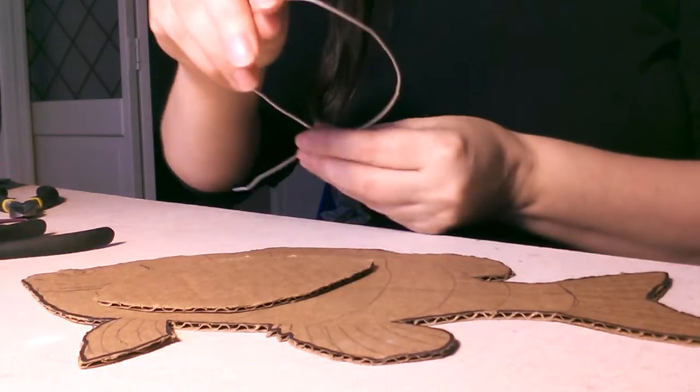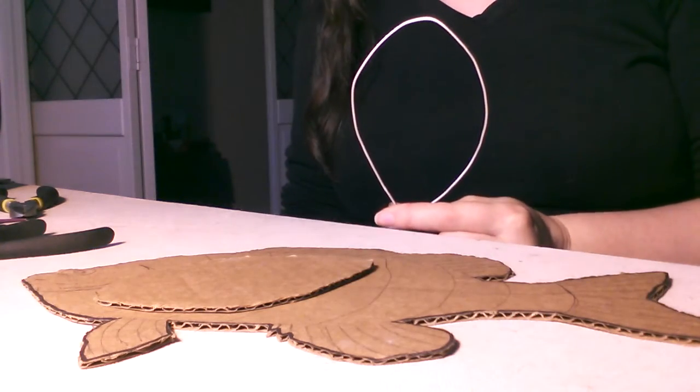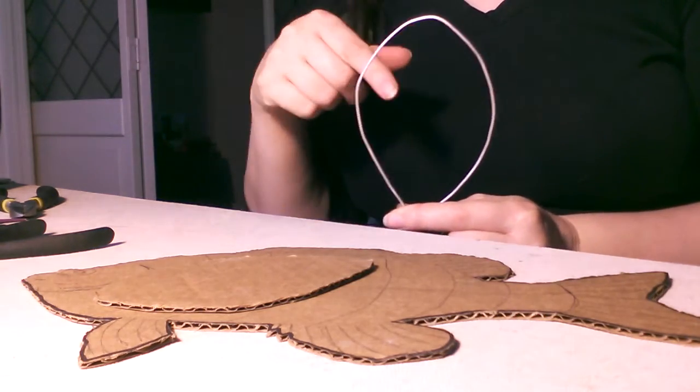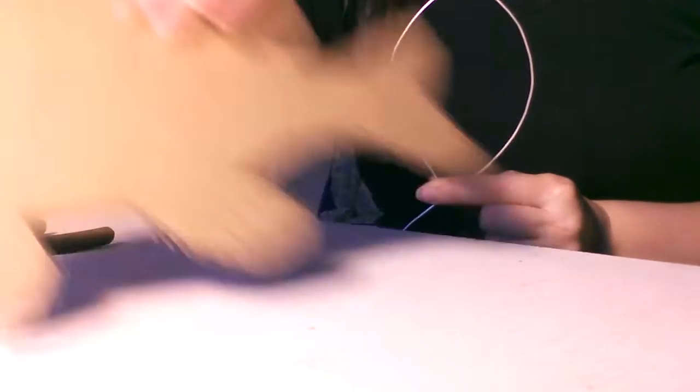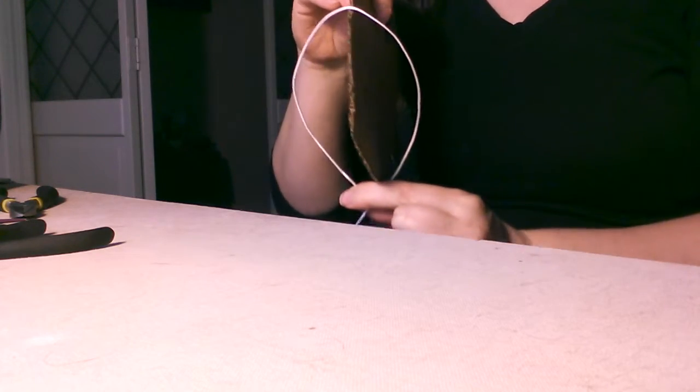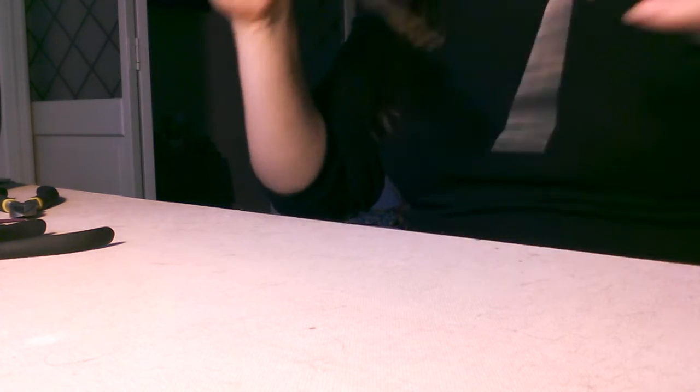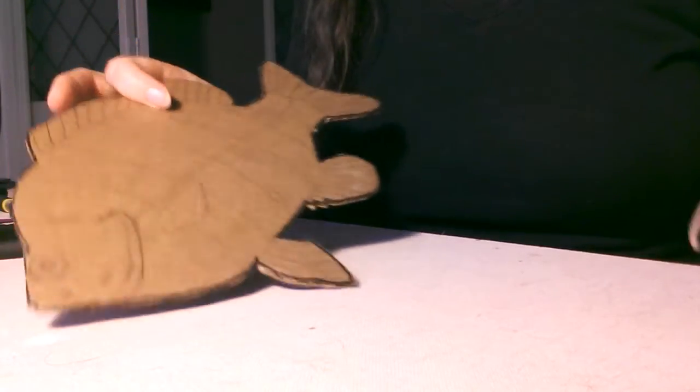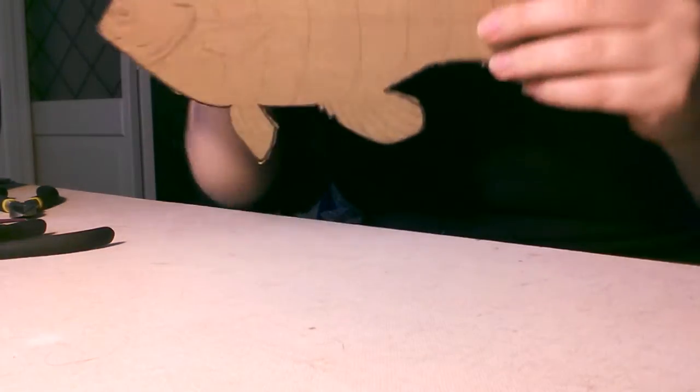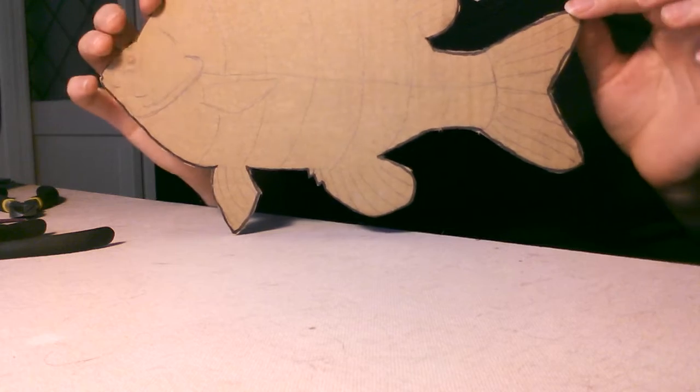So now I have sort of the three-dimensional shape of the body of the fish. So imagine these going this way around the cardboard template. So you can see how it becomes three-dimensional. I'm not going to build this entire fish for you, but just to give you an idea of how I was planning on approaching this.